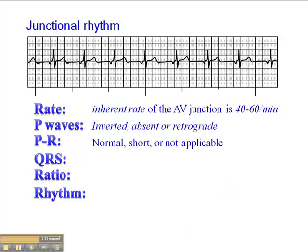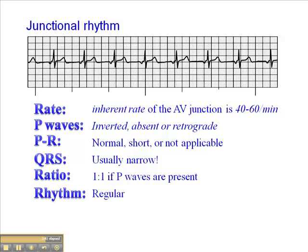The QRS complex is usually narrow. In the event that you see a rhythm where there are no visible P waves and the QRS is wide, we have to assume the rhythm is coming from an ectopic focus in the ventricles rather than junctional. But as long as the QRS is narrow and we see inverted, absent, or retrograde P waves, we're talking about a junctional rhythm. The P-to-QRS ratio where P waves are visible is 1 to 1, and the rhythm in a junctional rhythm is regular.